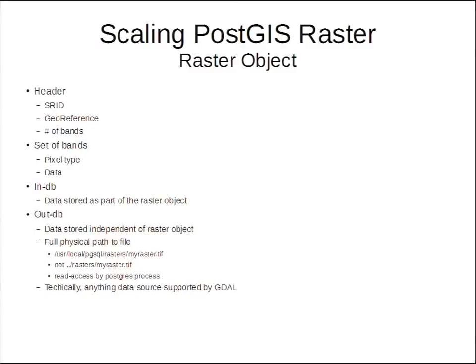Basically, a raster object is defined by a header — the overall georeference information, number of bands, what spatial reference it's in — and then a set of bands, which define what type of data it is, such as 8-bit integer or other formats.